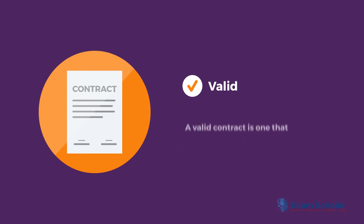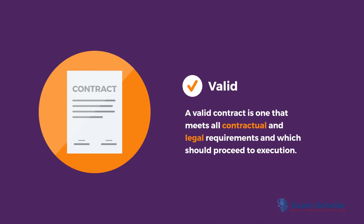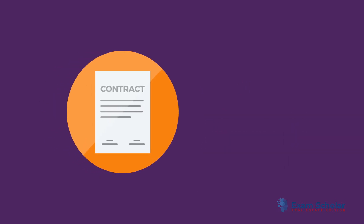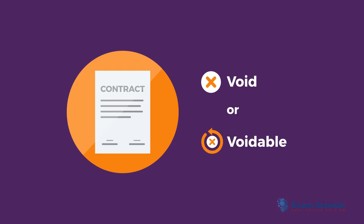A valid contract is one that meets all contractual and legal requirements and which should proceed to execution. However, it can get a little more complicated when a contract is defined as void or voidable.